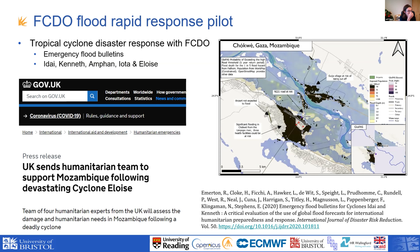We responded to cyclones Idai and Eloise in Mozambique. For Idai, which was the first one we responded to, we gave estimates of flood exposure and computed where we thought the most inundated locations would be. These turned out to be really useful — we were fairly successful at identifying the most exposed localities, which could then inform decision-making. Idai was a really rare event, a very large flood.